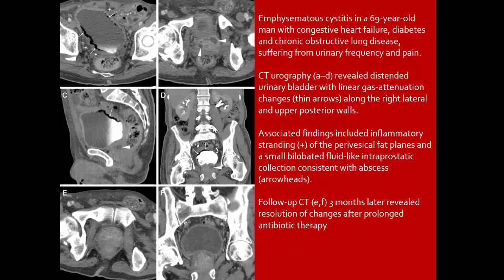Emphysematous cystitis in a patient with congestive heart failure, diabetes, and obstructive lung disease. CT demonstrates urinary bladder with linear gas attenuation along the right lateral and upper posterior walls. Associated findings include inflammatory stranding, perivesical fat planes, and small bilobulated fluid-like intraprostatic collections. Resolution of these changes after therapy is demonstrated.